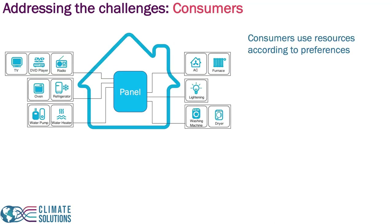To understand this, we have to start by understanding traditional consumers. Traditionally, consumers utilize resources according to preferences. In a typical home — and this also happens with commercial customers — you have various appliances: refrigerator, oven, radio, DVD player, TV, a water pump, a water heater, HVAC, furnace, lighting, washing machine, and dryer. They're all connected to the panel.